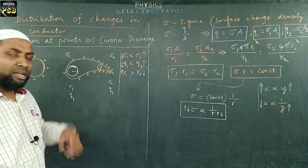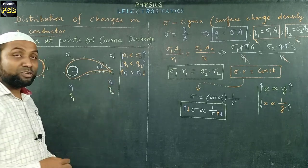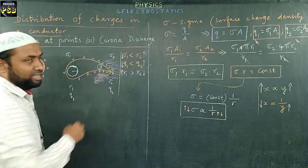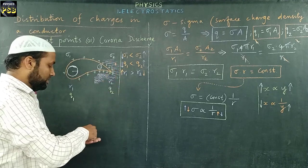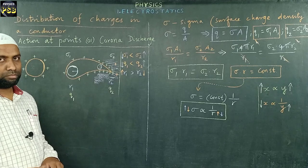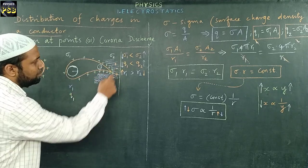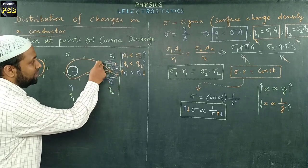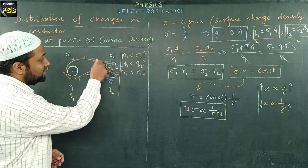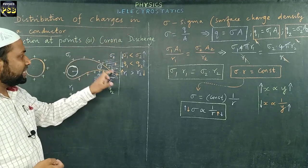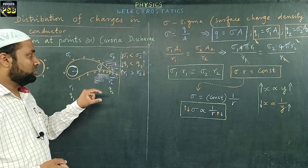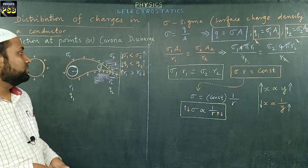Because of the large number of charges at the sharp end, the potential increases at this end, which ionizes the surrounding gas. The air gets ionized into positive and negative ions. These negative charges neutralize the positive charges on the sharp part of the conductor, so the number of charges at the sharp edge reduces. This leakage of charges is called corona discharge, otherwise referred to as action at points.